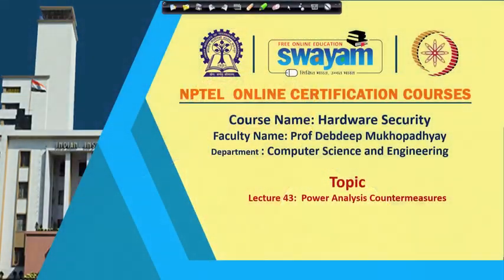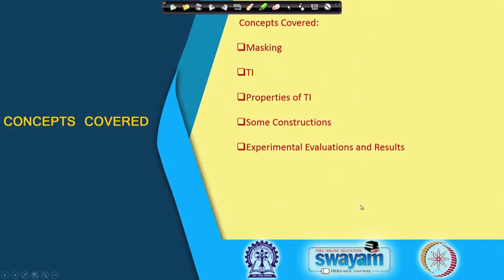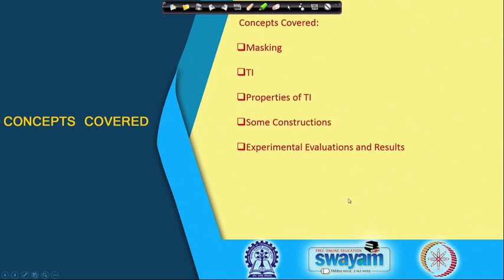Welcome to this class on hardware security. In the last few classes we have been discussing about power analysis. In today's class we shall be trying to see how we can counter power analysis. Specifically we shall be talking about a technique called masking, which is a very popular strategy to prevent or protect against power attacks. We shall then discuss some pitfalls of masking, which will lead us to the introduction of a technique called TI, or threshold implementation. We shall look into some properties of TI, see some possible constructions, and conclude with experimental evaluations and results on a specific case study.